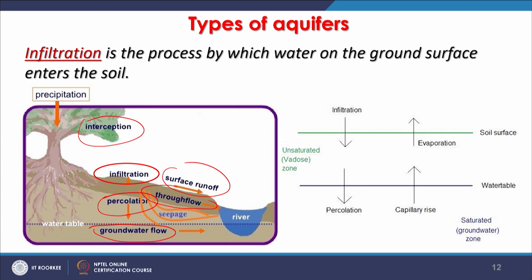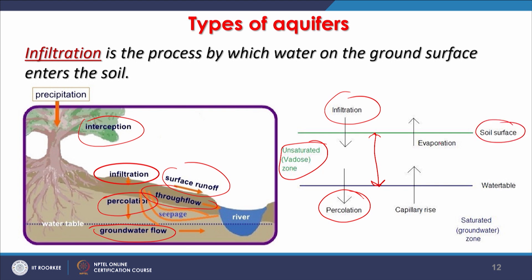In this schematic, infiltration and then subsequently percolation are shown; this is the unsaturated or vadose zone. Evaporation from the surface takes place only within the top few centimeters, but capillary rise can bring water upward and allow more evaporation. In water-logged areas with shallow groundwater conditions, the aim is to lower the water table so that capillary rise does not happen smoothly. Below the unsaturated zone is the saturated zone or groundwater zone.